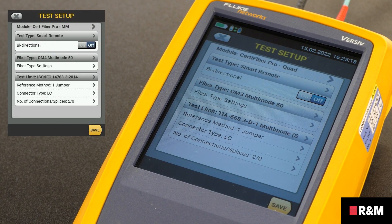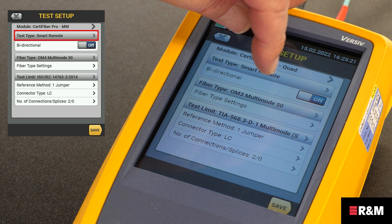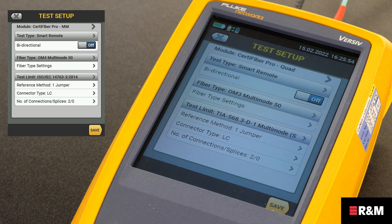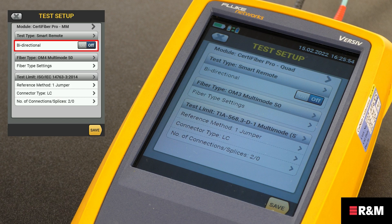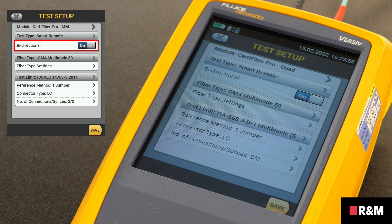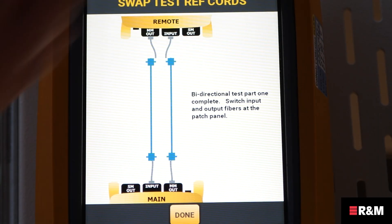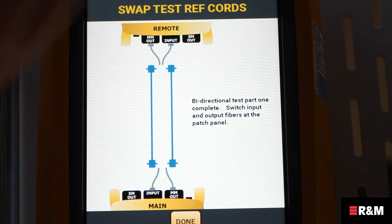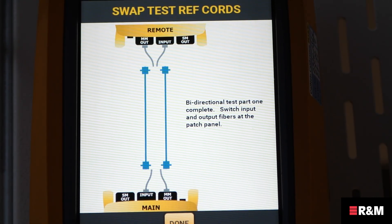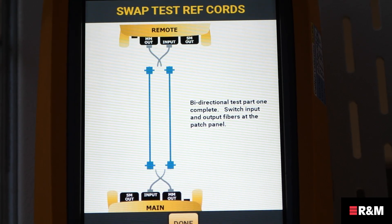On the test setup screen, tap the grey panels to change those settings. Fluke recommends using Smart Remote mode for tests on all dual fiber cabling. Also, for the test type, we have the option of bi-directional tests. Select OFF and the fibers are tested in only one direction. Select ON and the fibers are tested in both directions. In Smart Remote mode, the tester saves bi-directional results in two records. Each record contains the results for one fiber in both directions. R&M always recommends doing bi-directional tests.